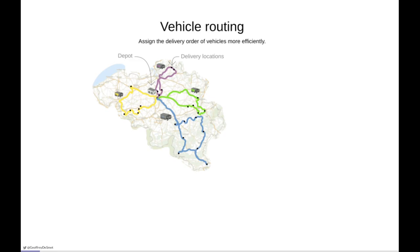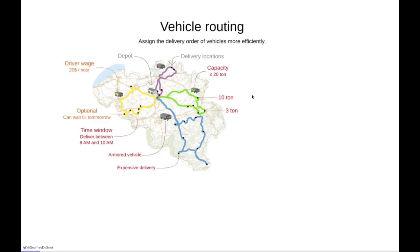Now these vehicles could be field technicians installing, for example, cable or internet at people's homes. But it could also be a last mile delivery where we're delivering items bought online. There are a number of constraints here. First of all, you might have a capacity constraint where a certain vehicle can only carry a certain amount of weight and volume, and every visit takes up a number of weight and volume in that truck, so we want to make sure there's enough room inside the truck to go to all of the visits.